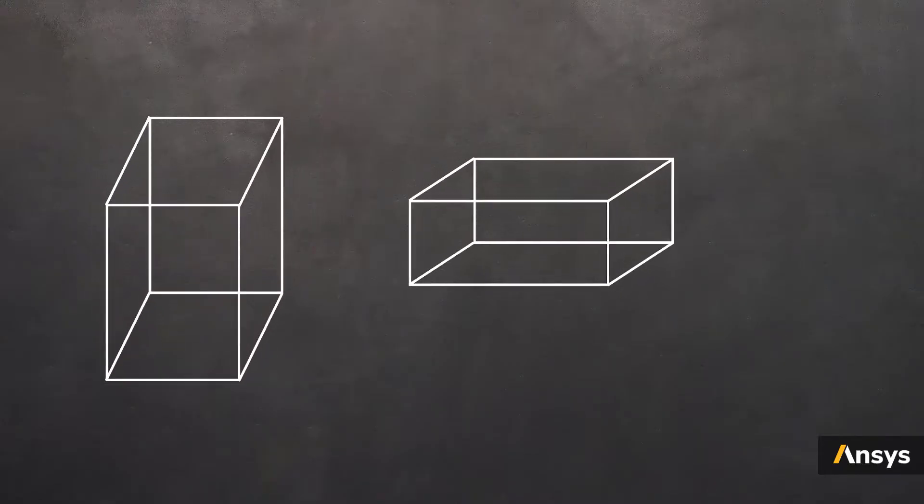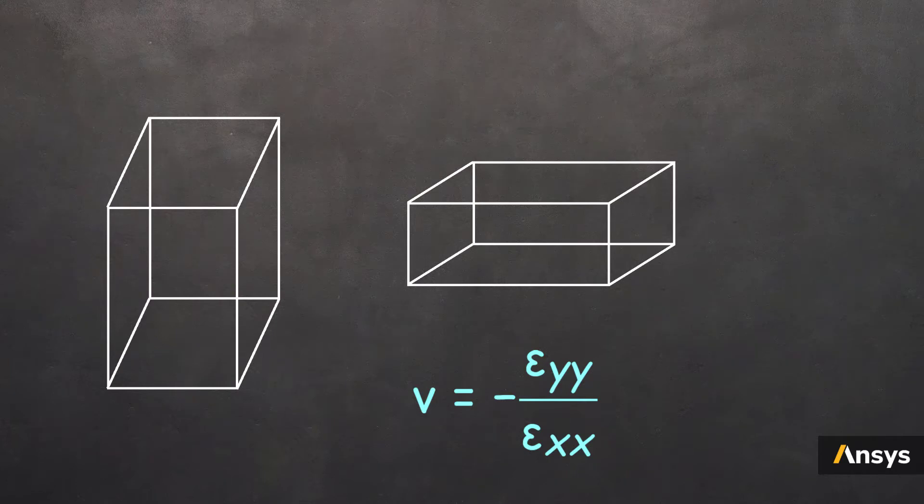This is due to the Poisson's effect, which states that the materials undergo a deformation of negative nu times the strain applied in a perpendicular direction. The negative sign indicates that this deformation generally occurs in a direction opposite to actual deformation. So, if you stretch the material in one direction, it tends to compress in the other two directions. This is an attempt by the material to preserve its volume as much as it can, depending on how compressible it is.